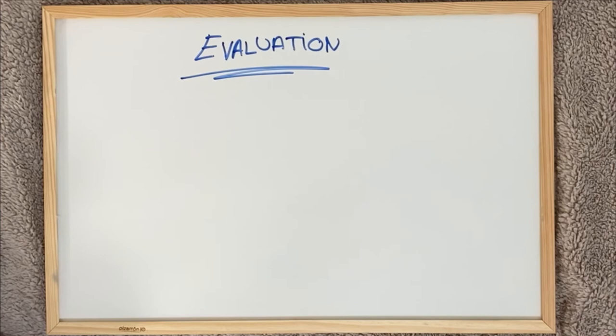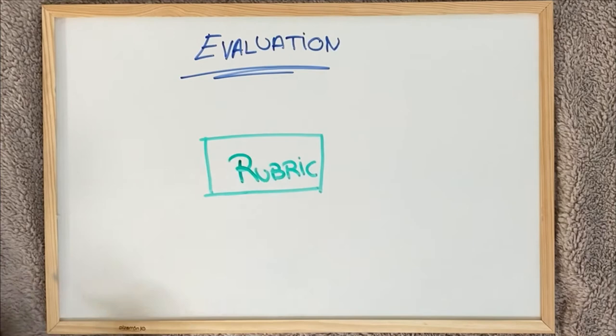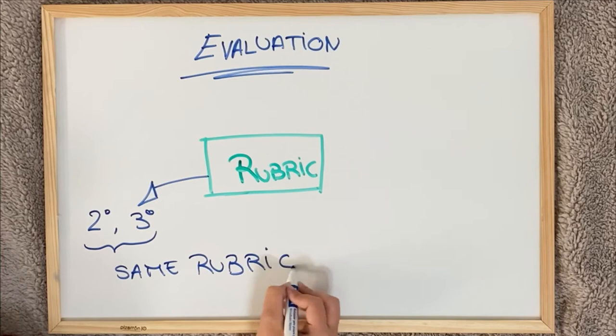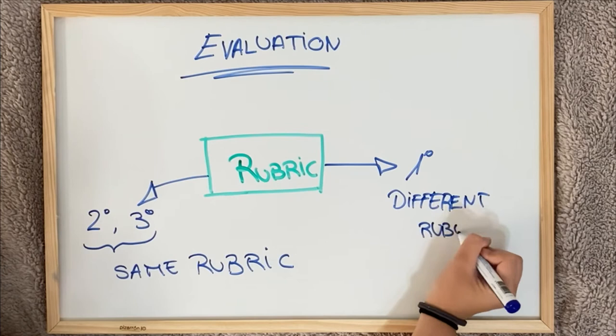And after all this information, how do we evaluate these activities? All the activities will be assessed by a rubric. Activities 2 and 3 will have the same rubric because they are both in video format, but activity 1 will have a different assessment. On the one hand, the rubric of activity 1 will take into account fluency and pronunciation when speaking, the content of the presentation, the work group and creativity and originality.